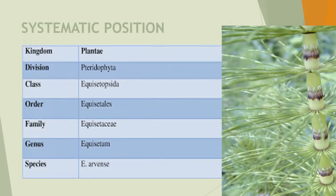Next, the systematic position of Equisetum. Equisetum is placed under Kingdom Plantae, Division Equisetophyta, Class Equisetopsida, Order Equisetales, Family Equisetaceae, and one of the common species is Equisetum arvense.